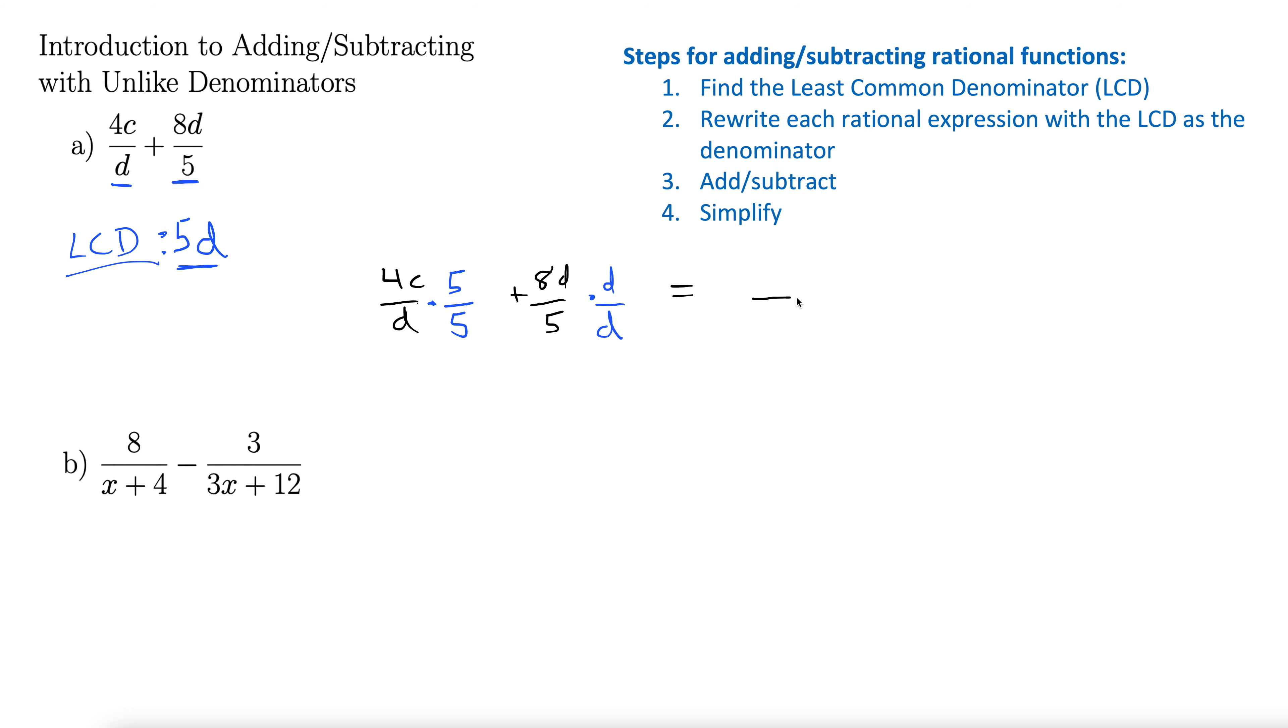So now in the denominator, we have 5d for both of them, 5d. And up top, we have, well, let's see, 4 times 5 is 20. So we have 20c plus, then we have 8, and then d times d. So 8d squared.